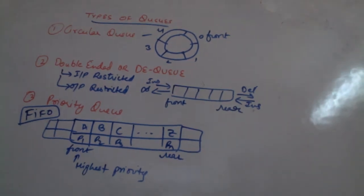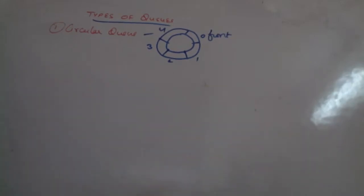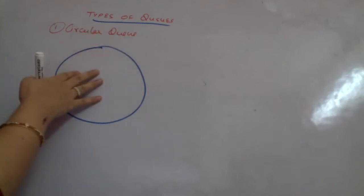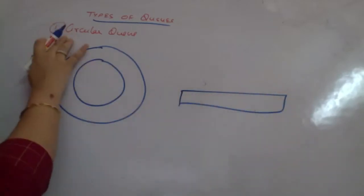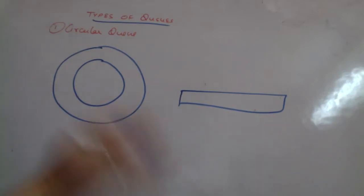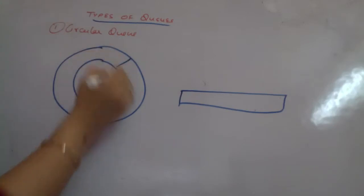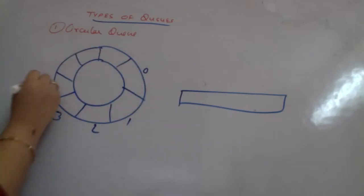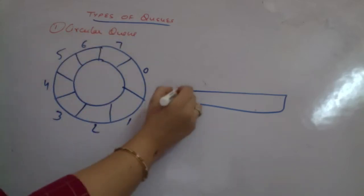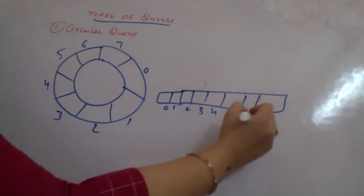Today we are going to concentrate on the circular queue. Let's see what we mean by a circular queue and how we do insertion and deletion. Suppose I have an empty circular queue — this is only a representation; in the computer system it will be saved as an array or linked list. Circular queues can be implemented using circular linked lists or normal arrays. I'm taking a small example: a circular queue with positions 0 through 7, so eight elements.